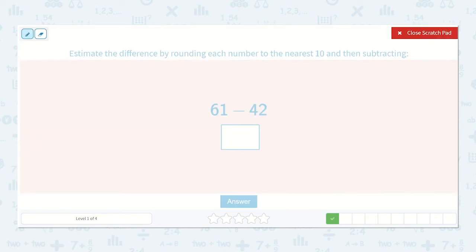Here we have 61 minus 42. I know 61 is plenty closer to 60 and 42 is closer to 40. So 60 minus 40 again, what was it? Yes, 20.